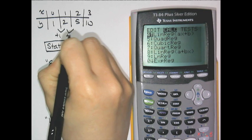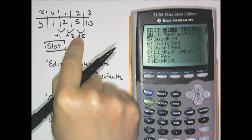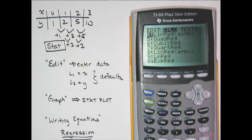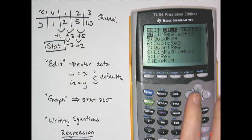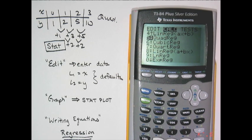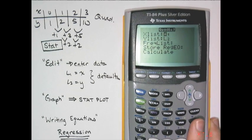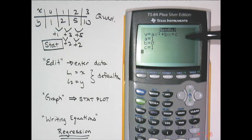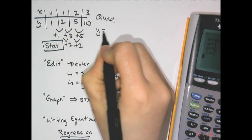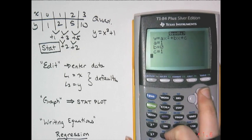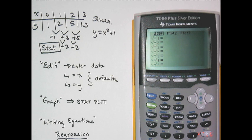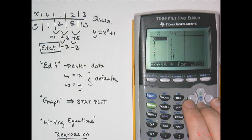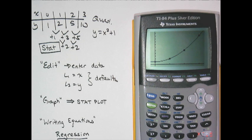Looking at this pattern: I'm adding 1, then 3, then 5 — odd integers — and the second difference is plus 2, which tells me the table is quadratic. So I'll run QuadReg. Press Enter, verify that X is List 1 and Y is List 2, go down to Calculate, and press Enter. It gives the standard form y = ax² + bx + c, with a = 1 and c = 1, so the equation is y = x² + 1. I can verify by entering it in Y= and checking the table — it matches — and graphing it hits all the data points perfectly.